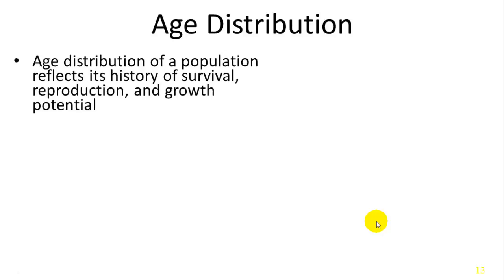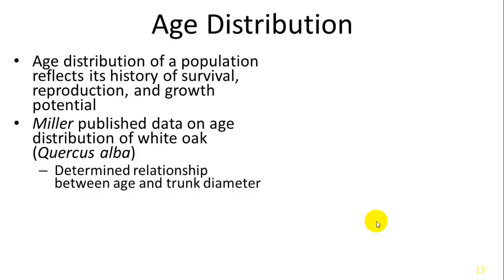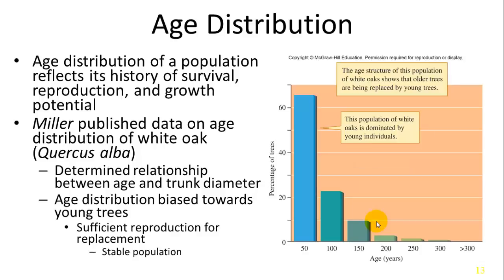Age distributions of a population reflect its history of survival, reproduction, and growth potential. Miller published data on white oaks, measuring trunk diameter as a proxy for age. He found that the age distribution was biased towards young trees — lots of young trees and not so many older trees. This indicated continual recruitment of young trees, so when older ones died, younger ones were right there to replace them, making for a very stable population.